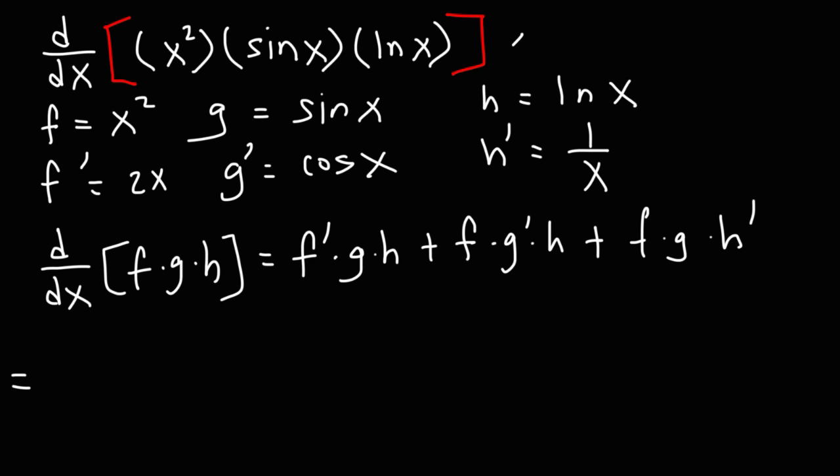So the derivative of this function is going to be f prime, which is 2x, times g, which is sine x, times h, that's ln x, plus f, that's x squared, times g prime, which is cosine x, times h, which is ln x.